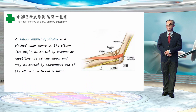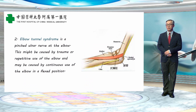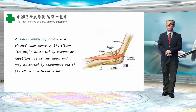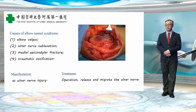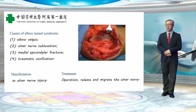The second syndrome is elbow tunnel syndrome — a condition involving a pinched ulnar nerve at the elbow, caused by trauma, repetitive use, or continuous elbow flexion. Causes include elbow valgus, ulnar nerve subluxation, medial epicondyle fracture, and traumatic ossification. The manifestations are those of ulnar nerve injury. Treatment is operation to release and transpose the ulnar nerve.